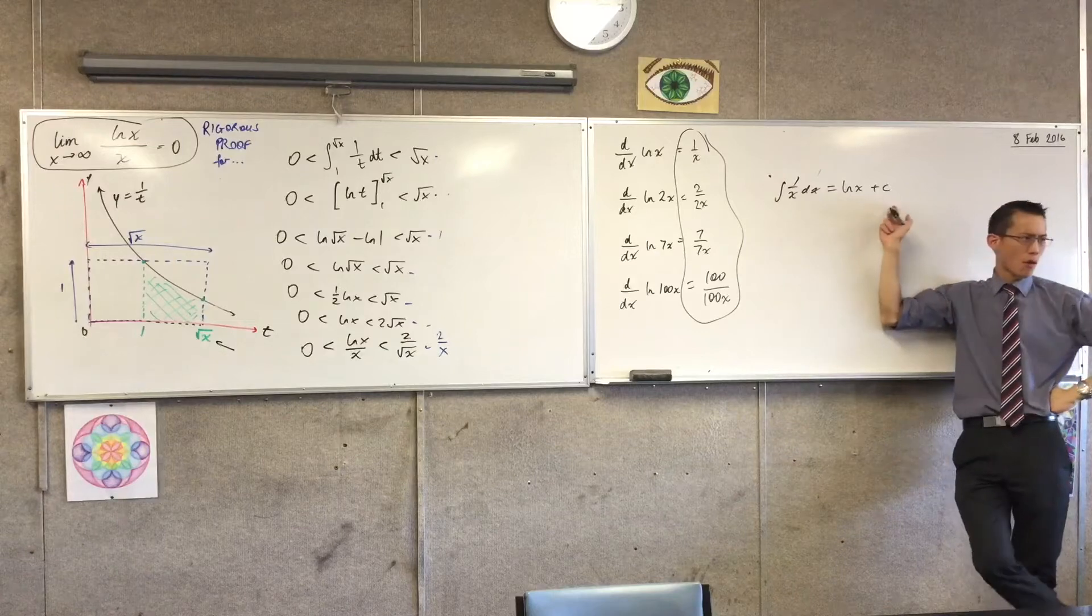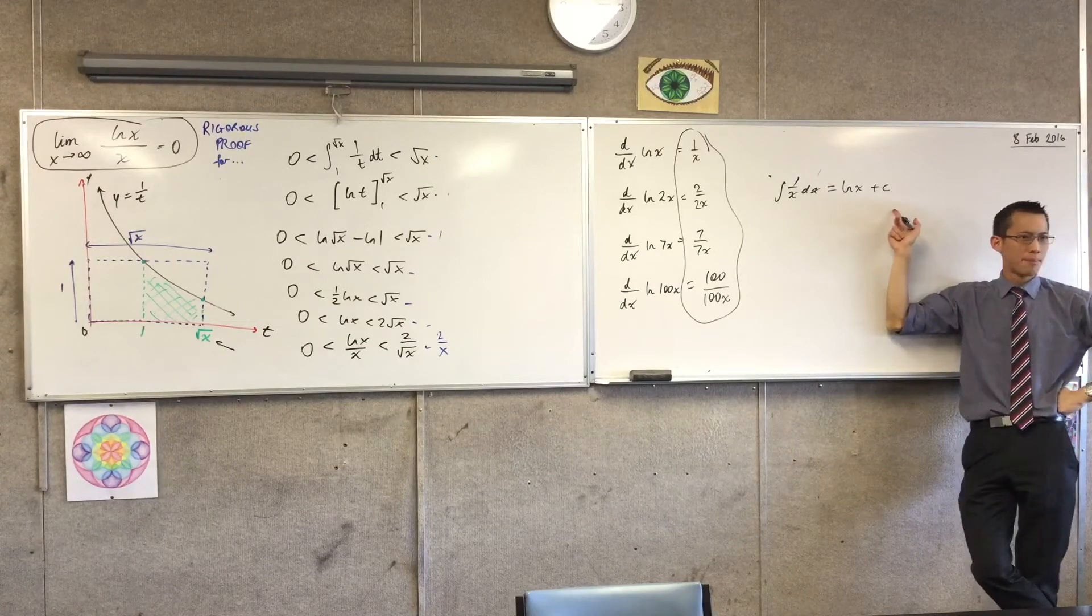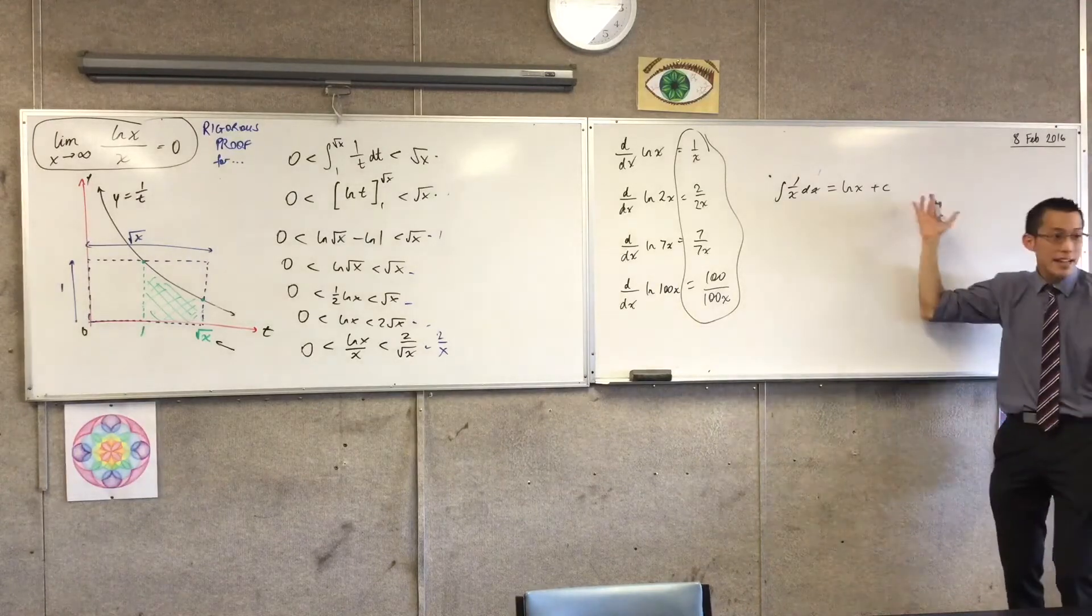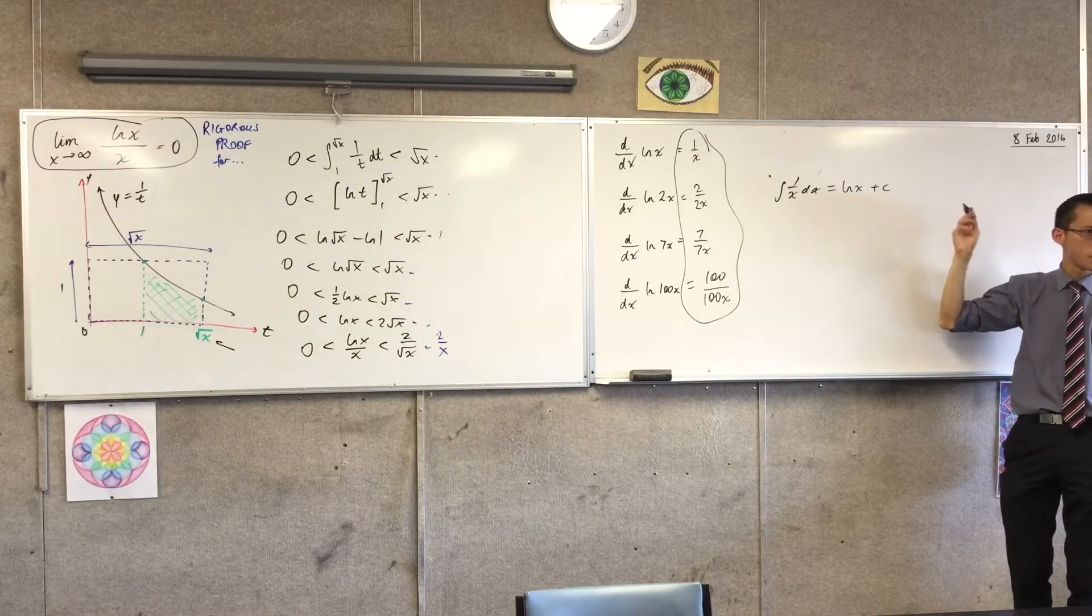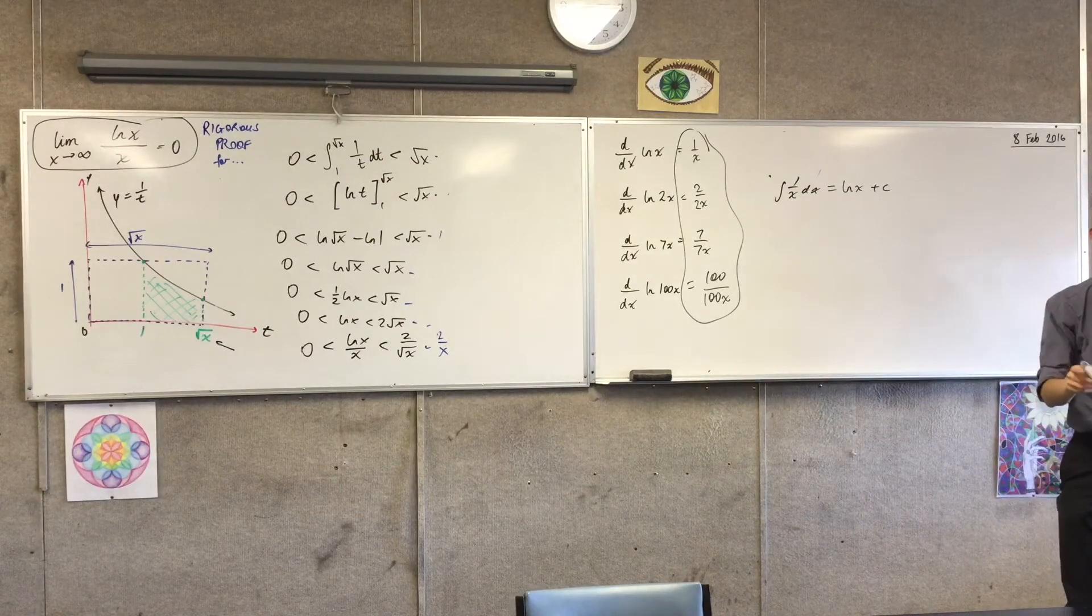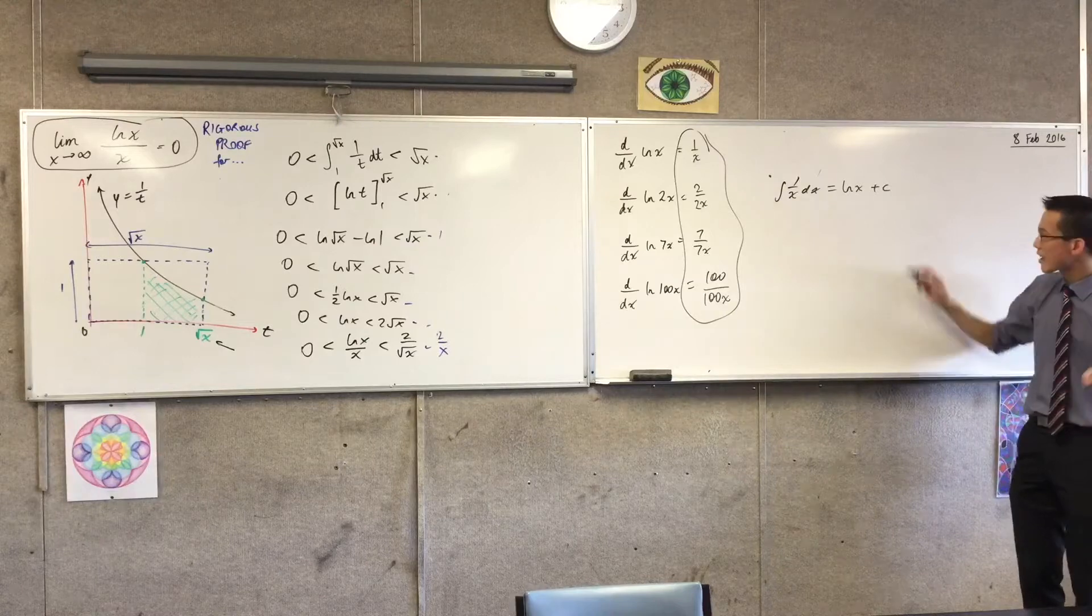Where did this come from? Why did we introduce this? Before it was called the constant of integration, we learned it about anti-differentiation. Why did it appear? Because it could fit into the same graph but shifted up and down.